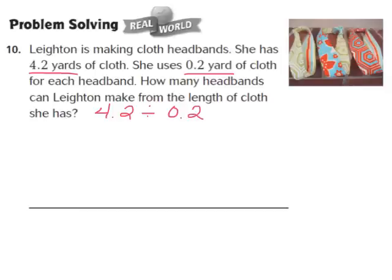We're using our decimal models to show division. Step number 1 says to shade the decimal models to represent the dividend, which is 4 and 2 tenths. We're going to draw models divided into tenths because we have 4 and 2 tenths and 2 tenths. Go ahead and pause the video, draw those models, and shade to show 4 and 2 tenths. We'll check together to make sure we're on the right track.